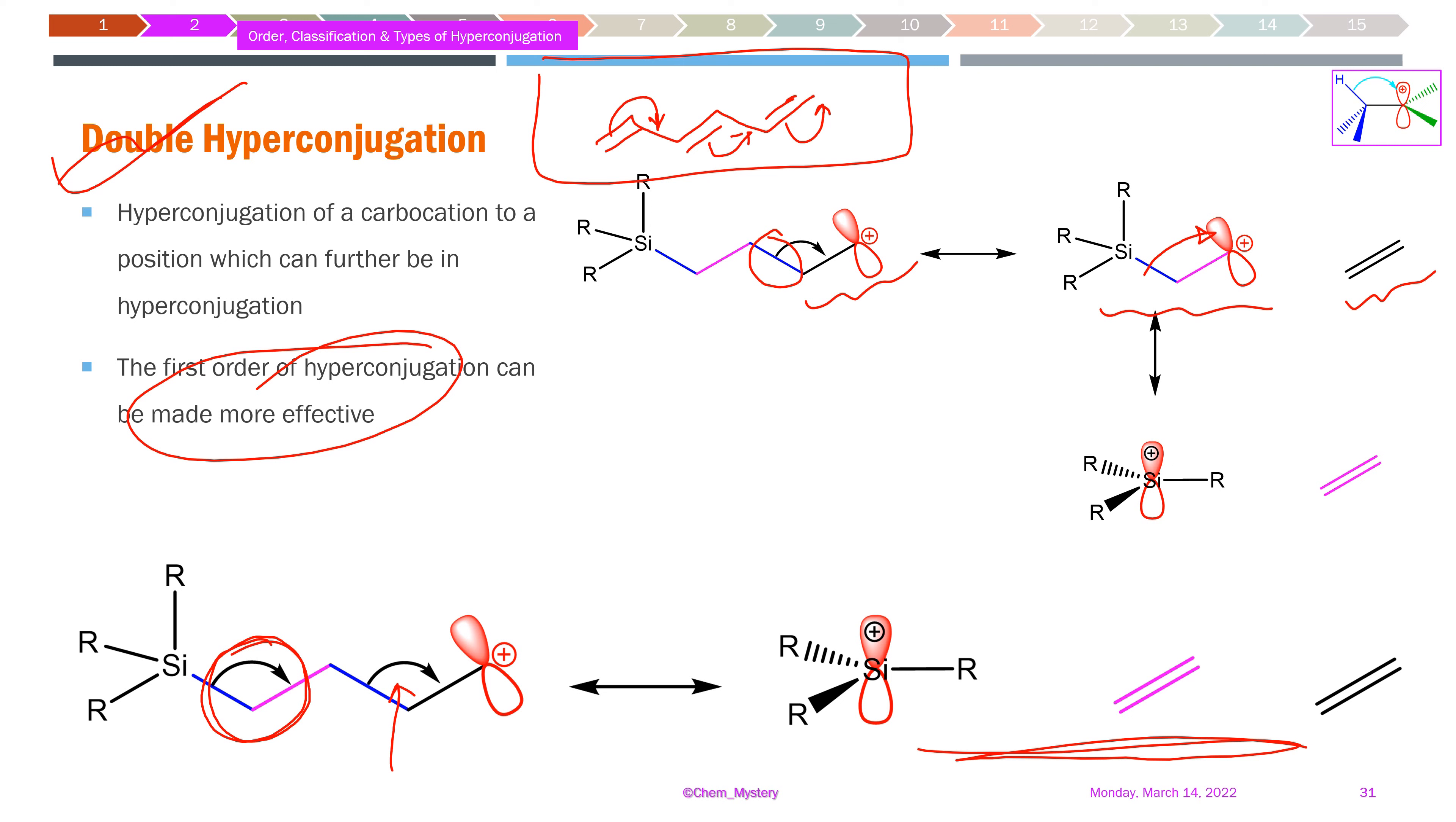The key concept is that hyperconjugation, which would otherwise be unlikely, becomes effectively possible through a carbon-silicon bond at the adjacent position.